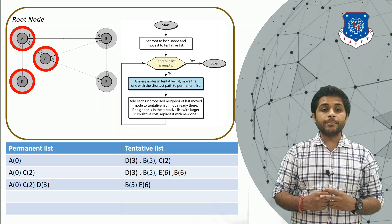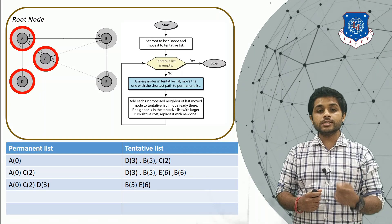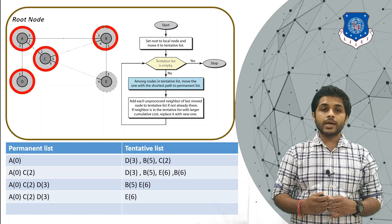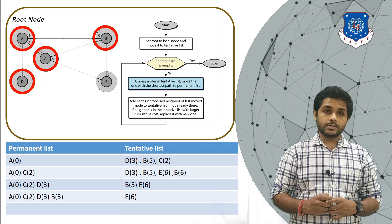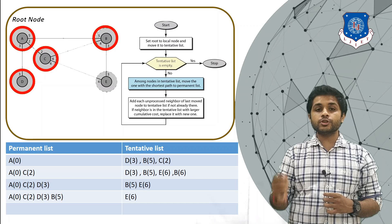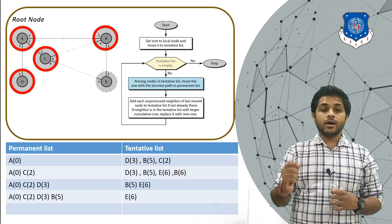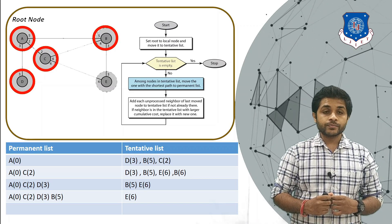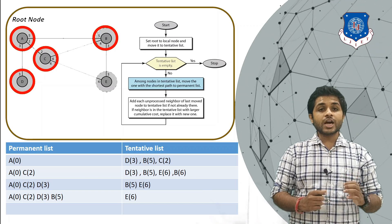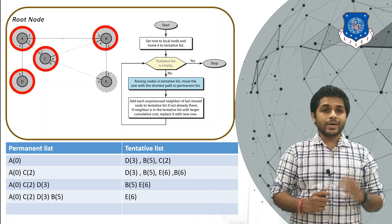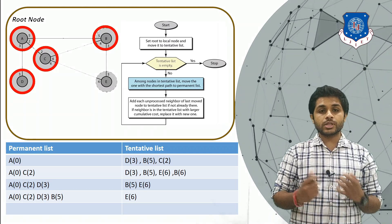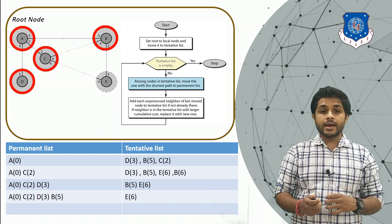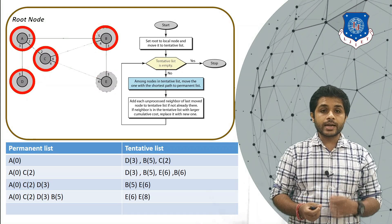We now have B(5) and E(6) in the tentative list. We move the shortest distance node, B(5), to the permanent list. After moving B, we check its unprocessed adjacent nodes. B has three adjacent nodes: A, C, and E. A and C are already in the permanent list, so the only unprocessed neighbor is E. We add E to the tentative list as E(8), because A to B is 5 and B to E is 3, giving a total of 8.